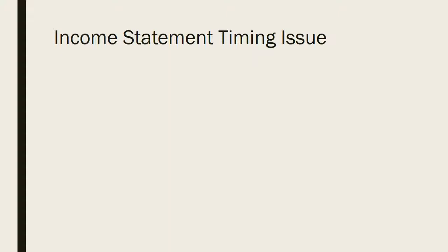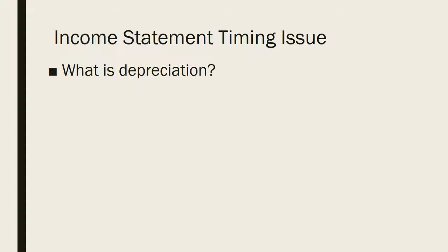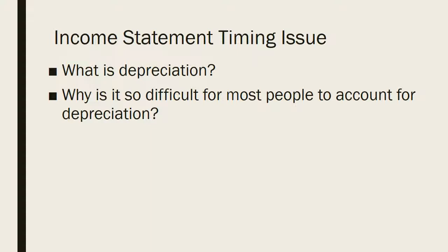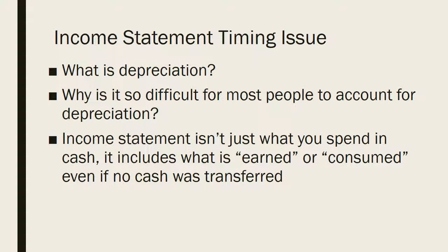Now let's get to one of the hardest sections of the income statement: depreciation. Depreciation is an expense. The nature of physical objects over time — say your car — is that they tend to be worth less over time. If it was worth $5,000 a year ago and it's worth $4,000 today, you've lost $1,000, so you've had a $1,000 expense. It's very difficult for people to account for depreciation because you're not actually spending that cash — it's not coming out of your wallet. You have to be aware of what your assets are worth in order to know how much your depreciation expense is. An income statement isn't just a budget of what you earned or consumed — it also includes things where no cash was actually transferred, like in our depreciation example.